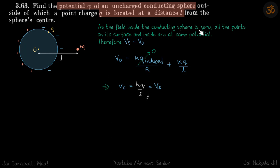As the field inside the conducting sphere is zero, all the points on its surface and inside are at same potential. So if you take a charge and move it anywhere around the region, because there is no electric field, work done is going to be zero, which means potential difference is also going to be zero.